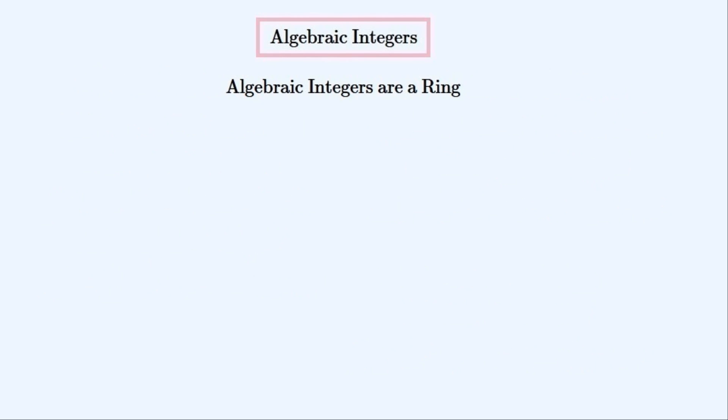The set of all algebraic integers is a ring. This means that for any two numbers that are elements of this set, their opposites, sums and products are also elements of this set. 0 and 1 are also elements of it. We've just shown this earlier, but we can say that they are algebraic integers because this set is a ring.